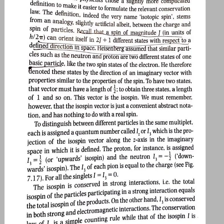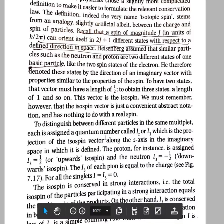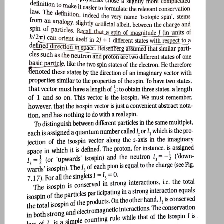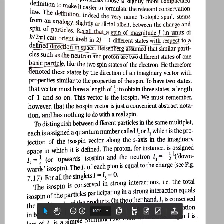We represent the isospin along an imaginary z-axis, analogous to the z-component of spin for an electron. In order to distinguish between different particles in the same multiplet, each is assigned a quantum number called I3 or IZ, which is the projection of the isospin vector along the Z-axis in imaginary space.